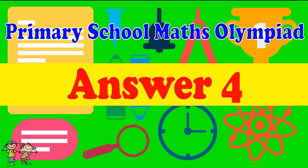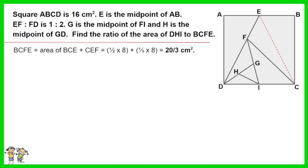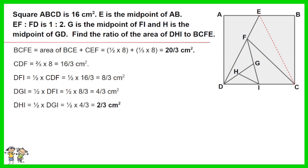Answer for question 4. BCFE equals area of BCE plus CEF equals half of 8 plus 1 third of 8 equals 20 over 3 centimeters squared. CDF equals 2 third of 8 equals 16 over 3 centimeters squared. DFI equals half of CDF equals half of 16 over 3 equals 8 over 3 centimeters squared. DGI equals half of DFI equals 4 over 3 centimeters squared. DHI equals half of DGI equals half of 4 over 3 equals 2 over 3 centimeters squared.